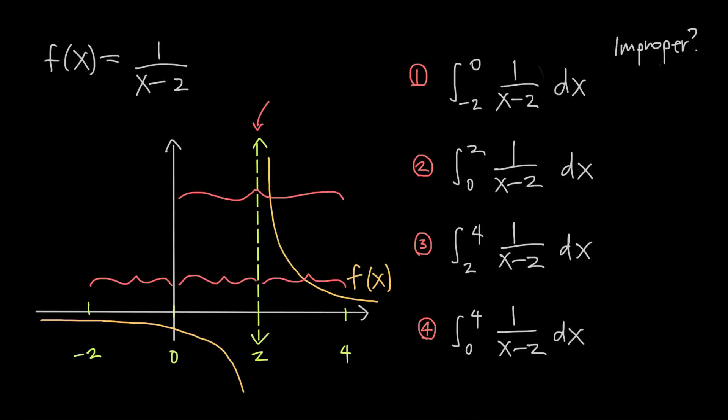As an example, let's think about the function 1 over x minus 2, which we can see has a vertical asymptote, and therefore a discontinuity at x equals 2. At first glance, all of these integrals seem like totally normal, definite integrals. But let's check to see if any of them are improper.